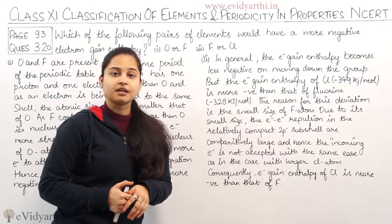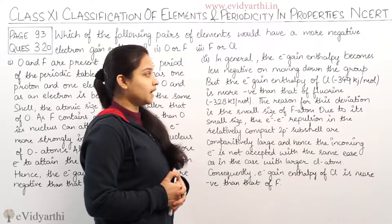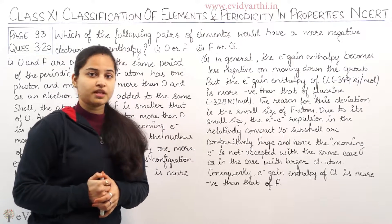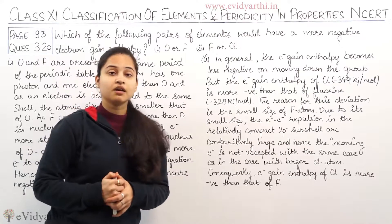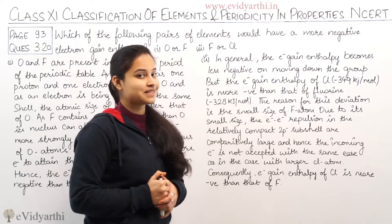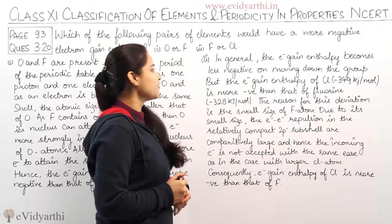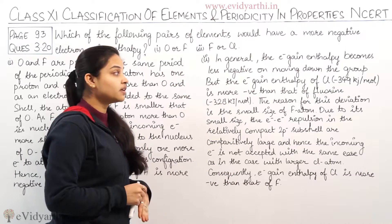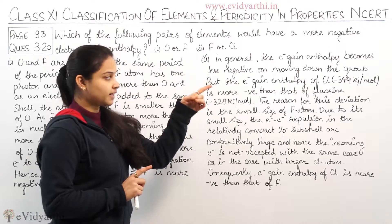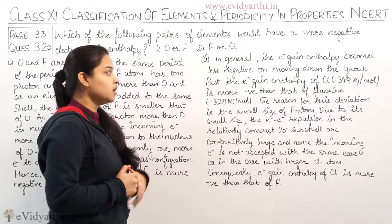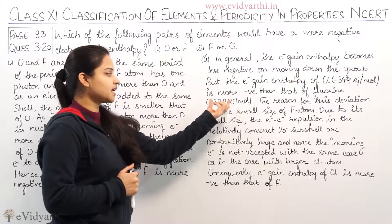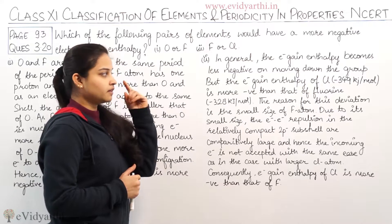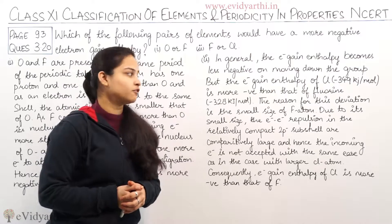According to the general trend, electron gain enthalpy decreases when we move down the group, meaning fluorine's electron gain enthalpy should be more negative than chlorine's. However, in reality, the electron gain enthalpy of chlorine is more negative — minus 349 kJ per mole — compared to fluorine's minus 328 kJ per mole.